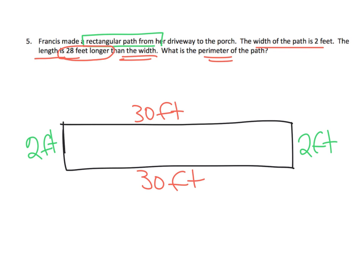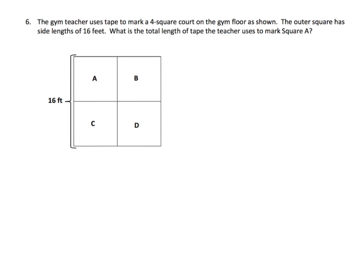The last problem: a gym teacher uses tape to mark a four-square court — I love four square! The outer square has side lengths of 16 feet: 16, 16, 16, 16. What is the total length of tape the teacher uses to mark just square A? They've given us a picture, and we'll assume all four are squares since it's called four square.